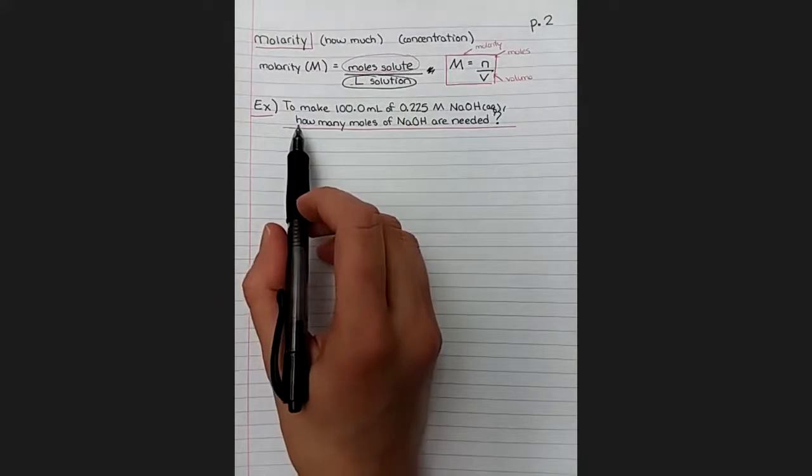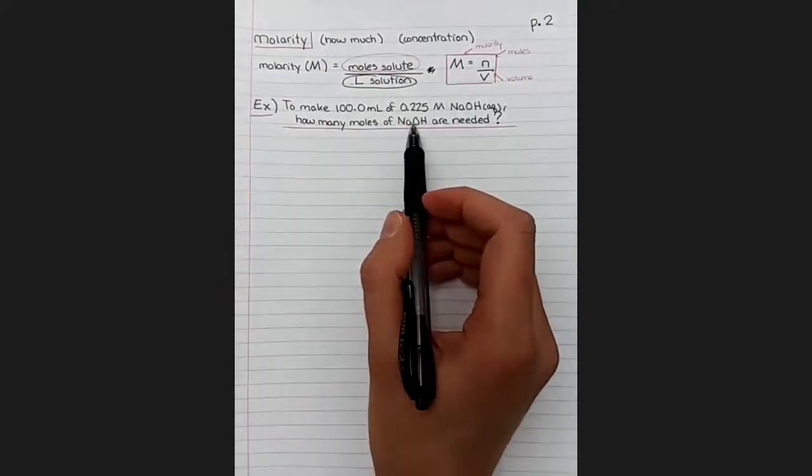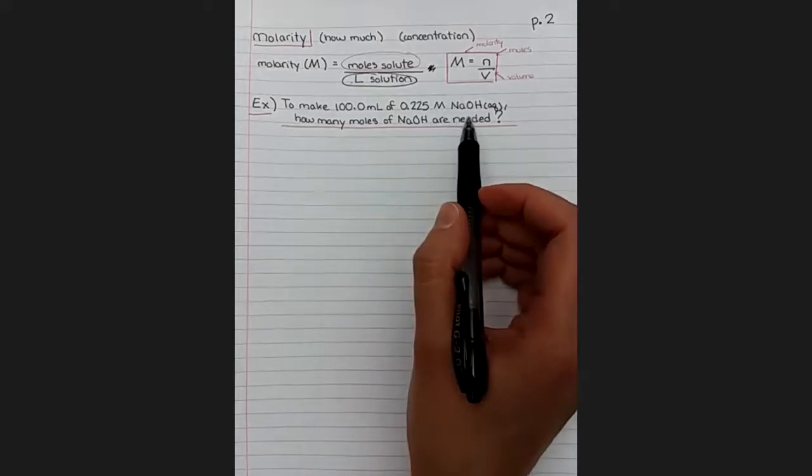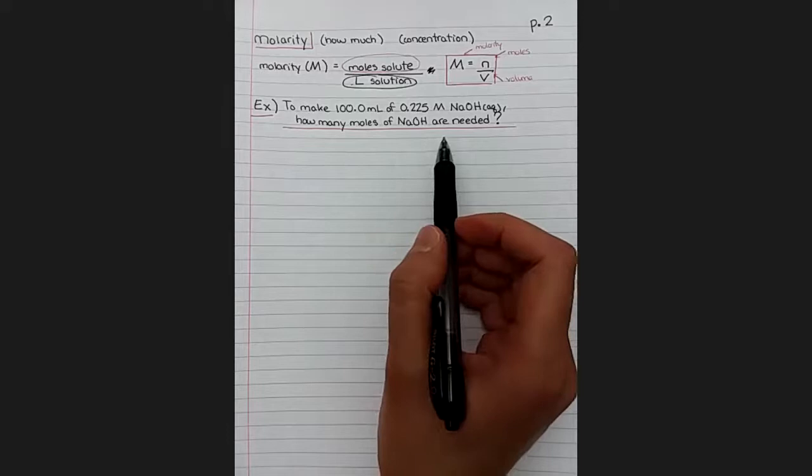So we're going to do an example problem. I've already pre-written it, so go ahead and pause here if you need a second to write it down. This example problem says to make 100.0 milliliters of 0.225 molarity sodium hydroxide solution, how many moles of sodium hydroxide are needed?